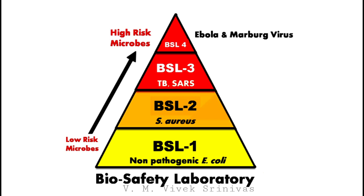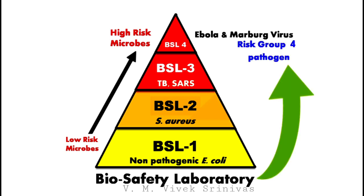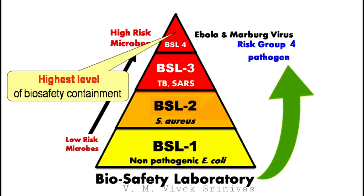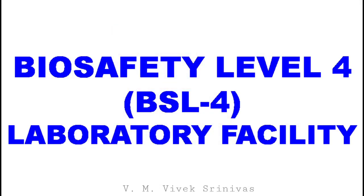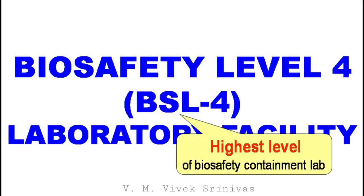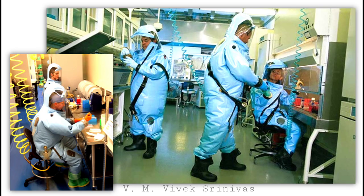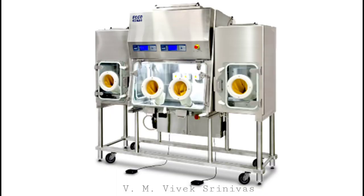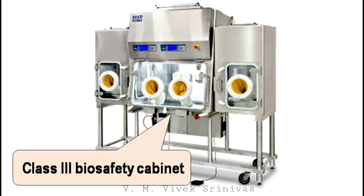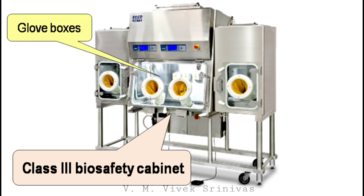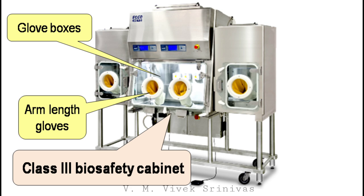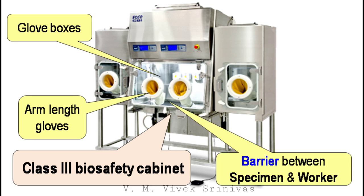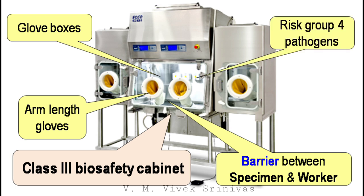There are four biosafety containment levels for handling different types of pathogens. Risk group 4 pathogens, which are extremely dangerous, must be handled only in biosafety containment level 4 laboratory facilities, which is the highest level of biosafety containment lab. In a BSL4 lab, a class 3 biosafety cabinet is used. This is also called a glove box, due to work being conducted using arm-length gloves. This gas-tight cabinet provides a barrier between the specimen being examined and the worker examining it, and is designed to work best with risk group 4 pathogens.